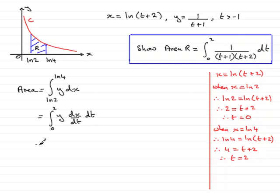What we need to do now is, we've got our integral going between 0 and 2. Now for y, we have 1 over t plus 1, so we can substitute that in here: 1 over t plus 1. And that is being multiplied by dx by dt.